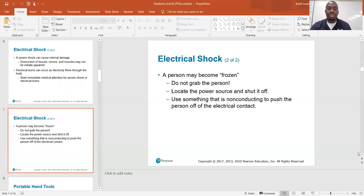Electrical shock—a person may become frozen. Do not grab the person. Locate the power source and shut it off. Use something that is non-conducting to push the person off of the electrical contact. If you happen to be lucky enough to have a big two-by-four sitting by, you can nudge them off with that because wood is non-conducting.